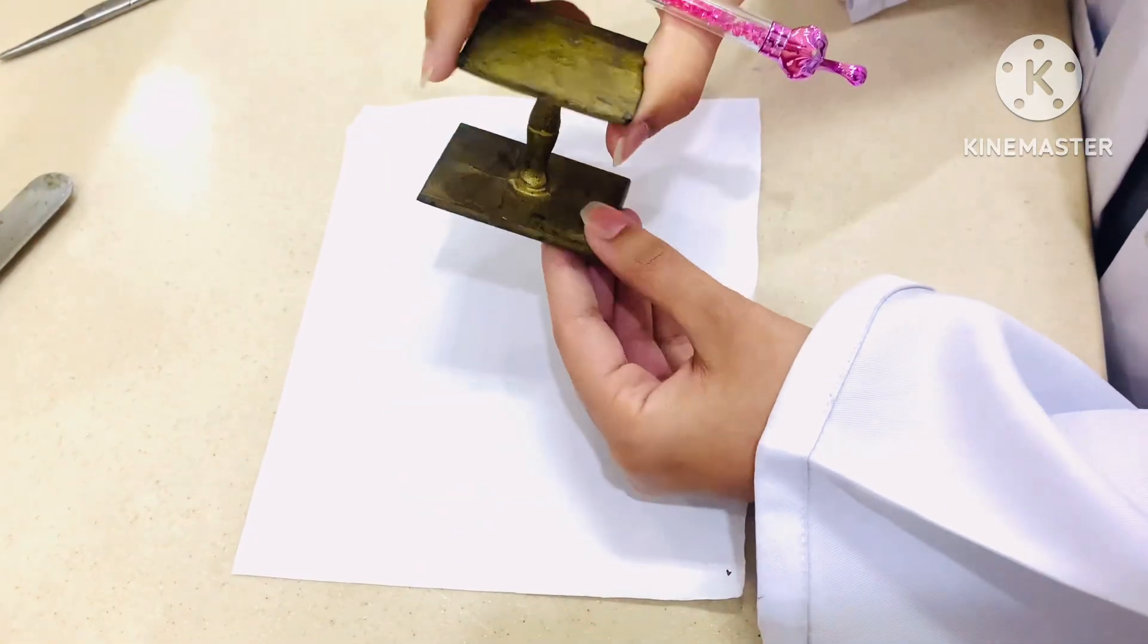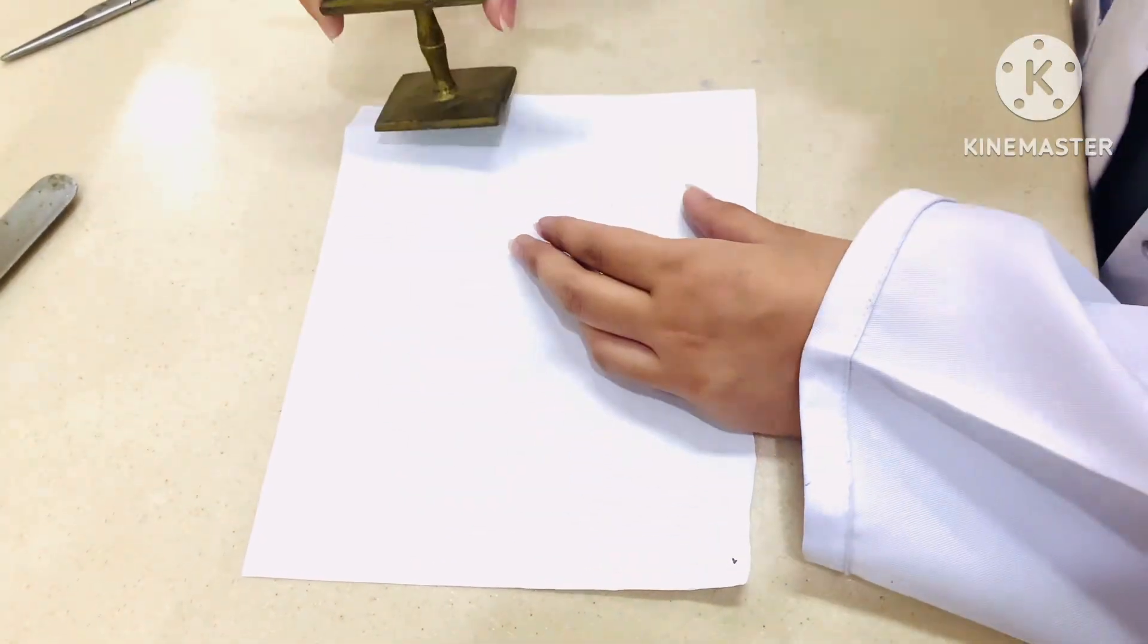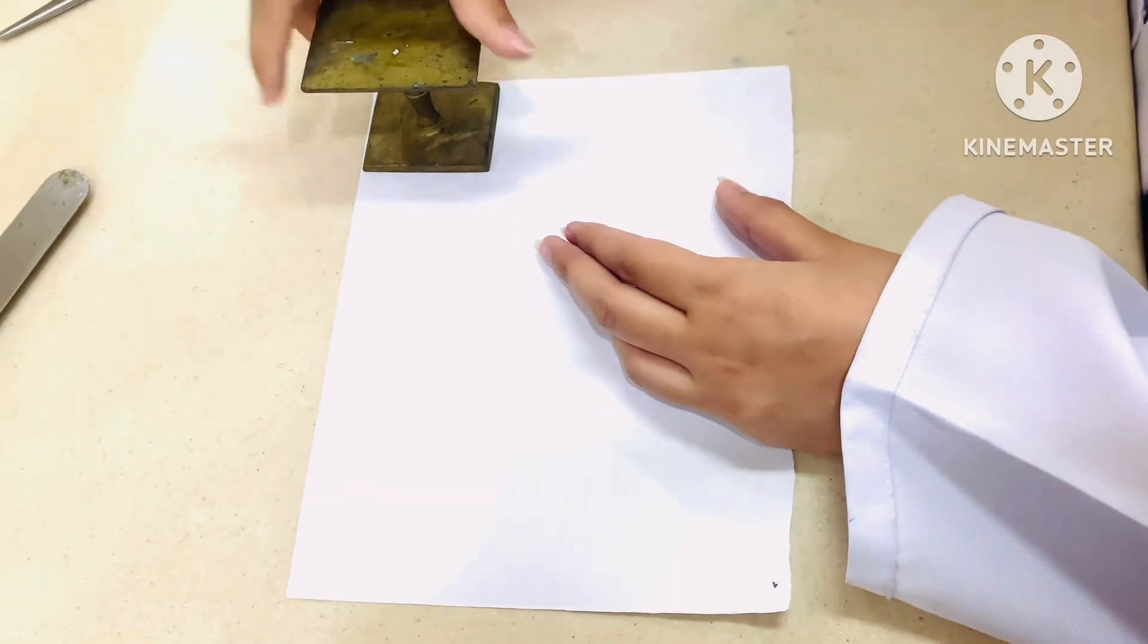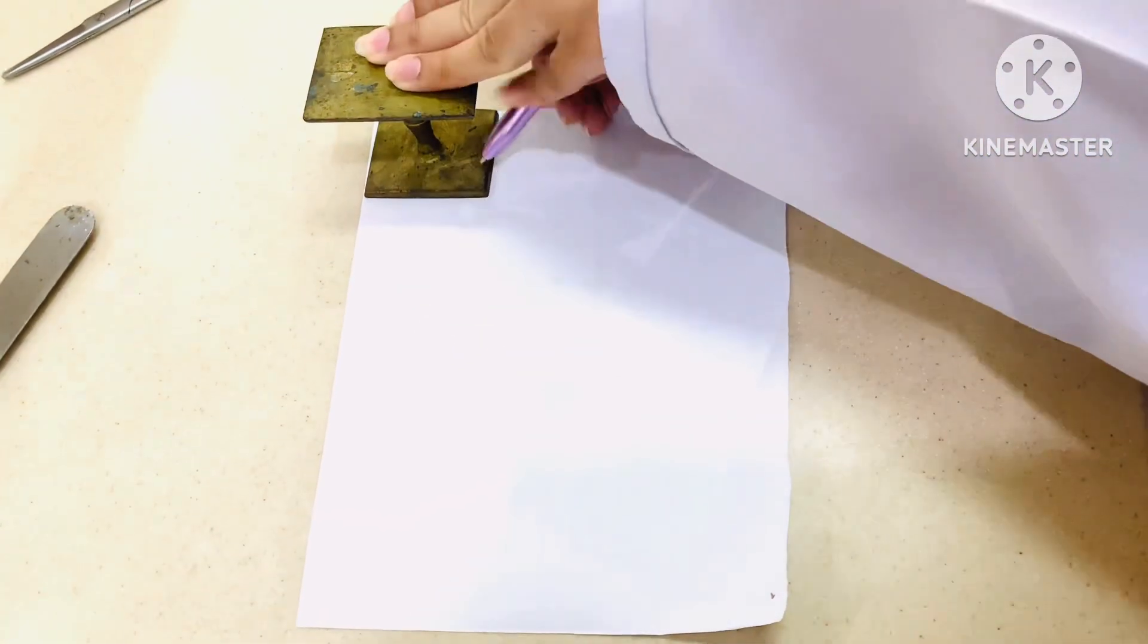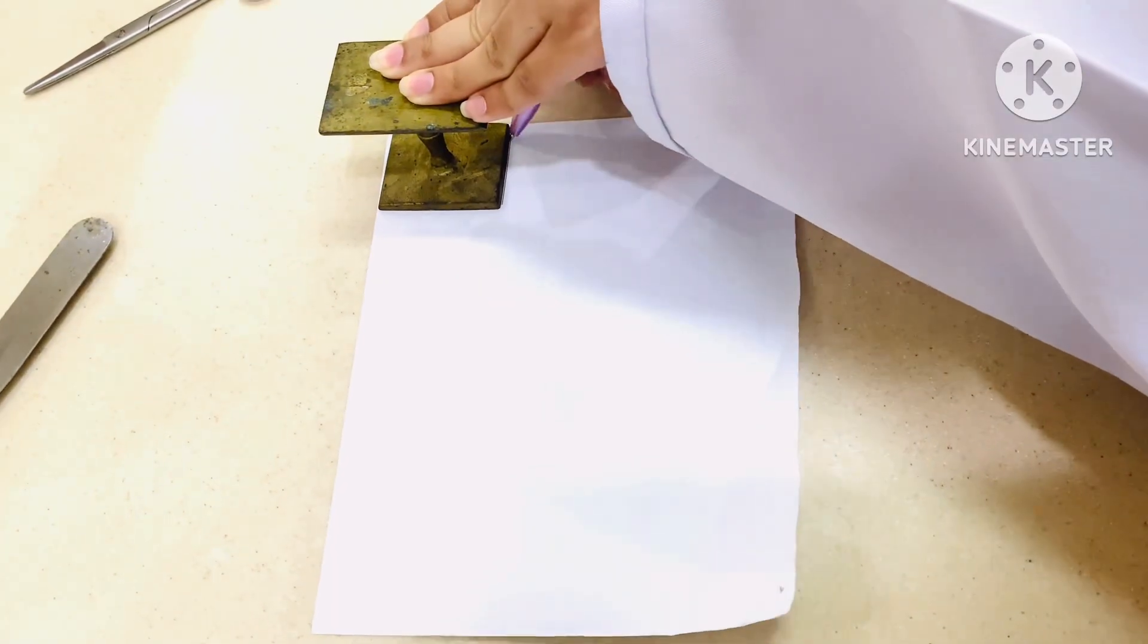Assalamu alaikum. This is paper folded in my hand which consists of two sides. Today we are going to talk about dispensing of powder. Dispensing of powder basically consists of four steps: folding of paper, wrapping, labeling, and sealing.